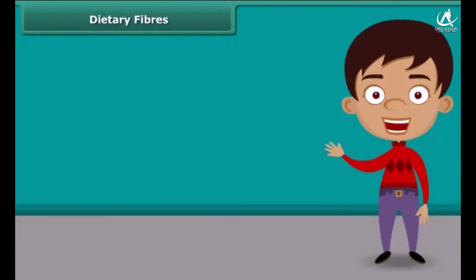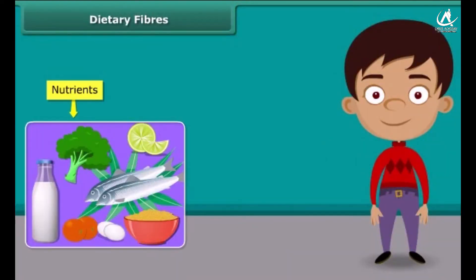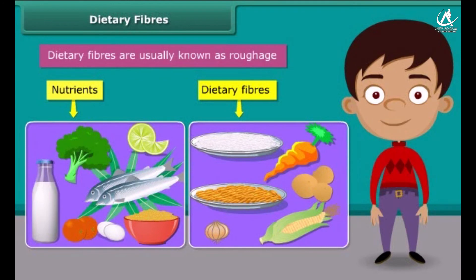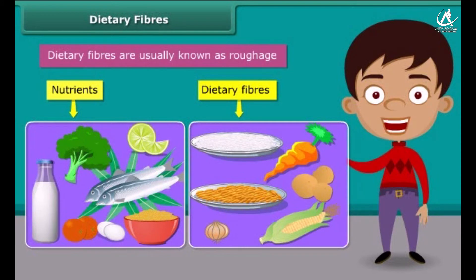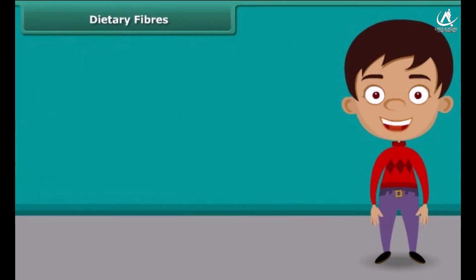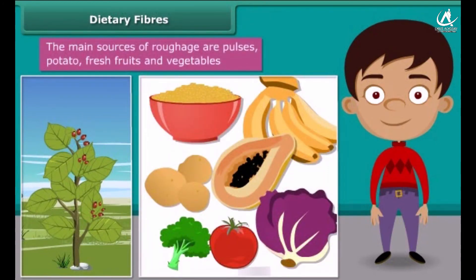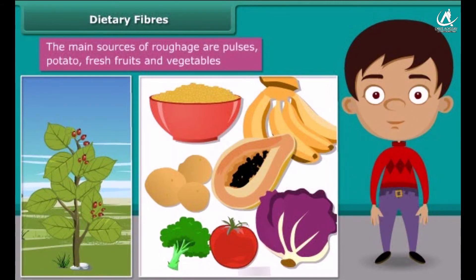Dear friends, do you know that besides nutrients, dietary fiber also plays an important role in our body. They are usually known as roughage. Roughage does not provide any nutrition to our body but adds bulk. They are found only in plants — pulses, potato, fresh fruits and vegetables are the main sources of roughage. This helps our body to get rid of the undigested food.